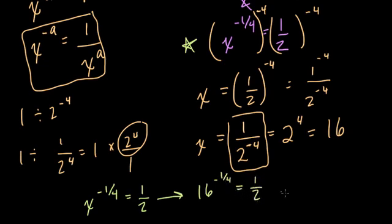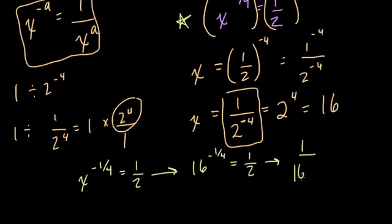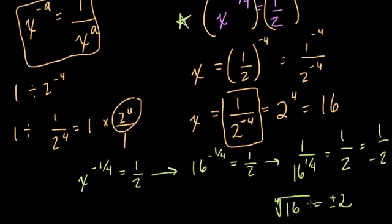Well, the negative 1 4th, that's going to be 1 over 16 to the 1 4th. So that should equal 1 half. I'm just reversing that process. So the 4th root of 16, that's what we're trying to find here in the denominator. So what times itself 4 times equals 16? Well, it could be positive 2 or it could be negative 2. However, I don't think it could be positive or negative 16. Think about that because if it was negative 16, we would need imaginary numbers to get 2. So yeah, 16 has 2 roots. This could be equal to 1 half or 1 over negative 2. So that's it.